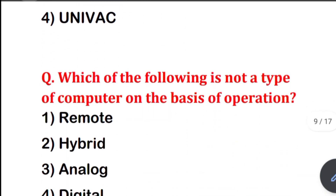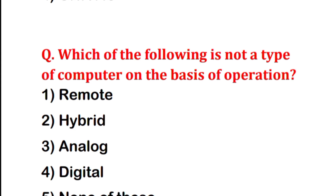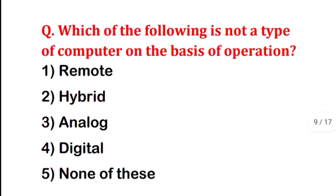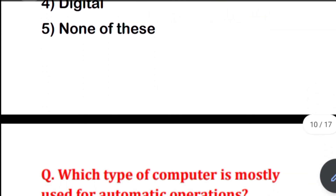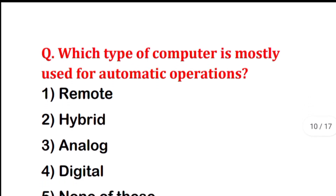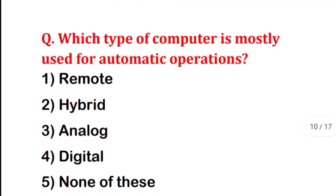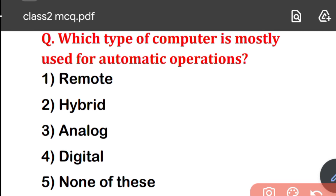Which of the following is not a type of computer on the basis of operation? The correct answer is Option 4 — Digital. Next: which type of computer is mostly used for automatic operations? The correct answer is Hybrid — hybrid computers are used for automatic operations.